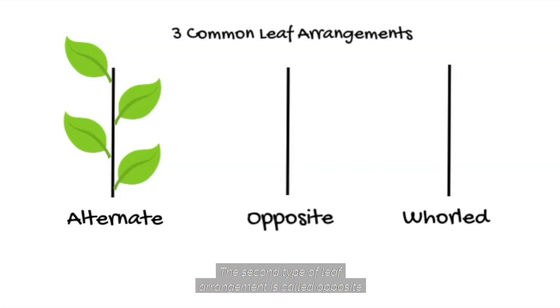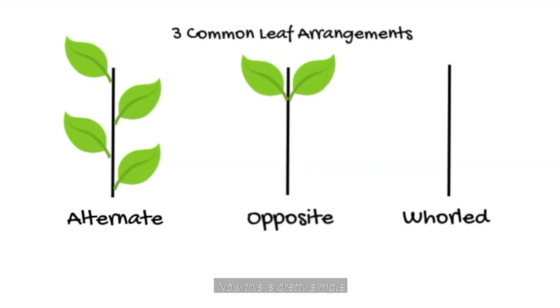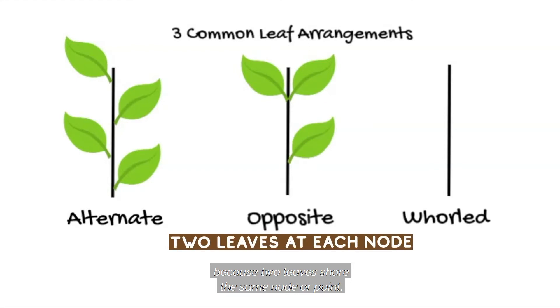The second type of leaf arrangement is called opposite. This is pretty simple because two leaves share the same node or point — they're just on opposite sides of the stem or branch.